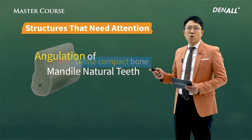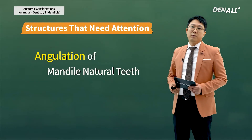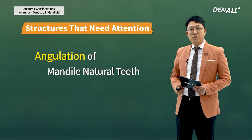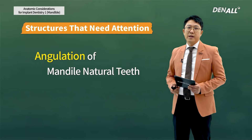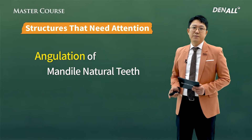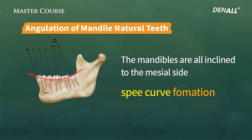This is not always the case, but when we place the implant, the angulation of the implant is similar to natural teeth. We need to understand the direction and angulation of teeth. In the mandible, all teeth are inclined to the mesial side, so that forms a natural curve of Spee.